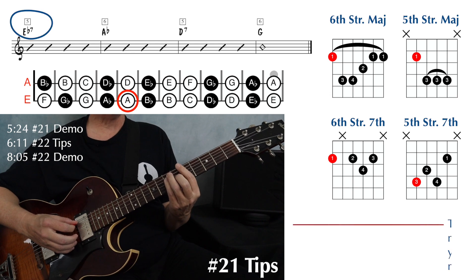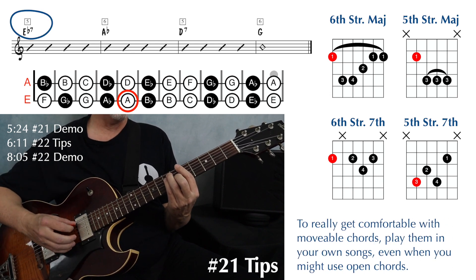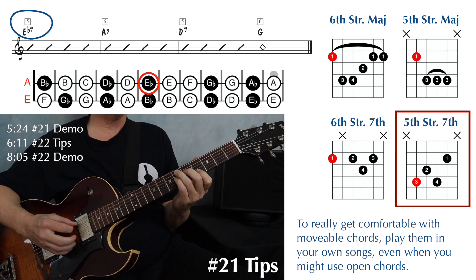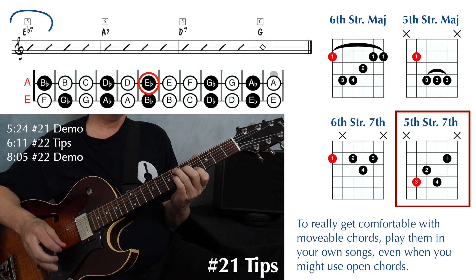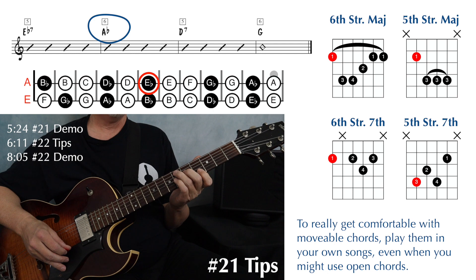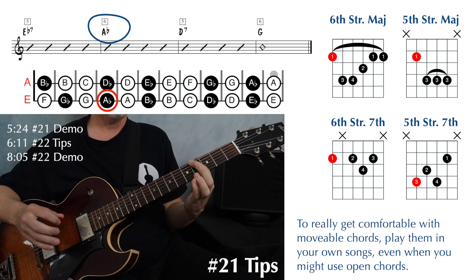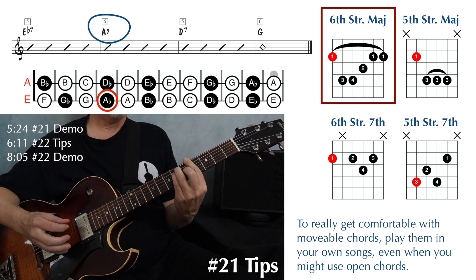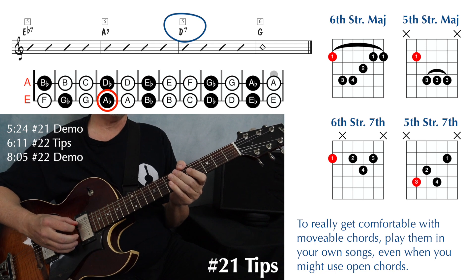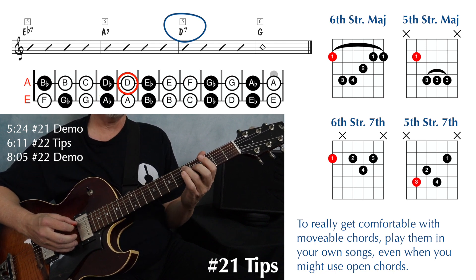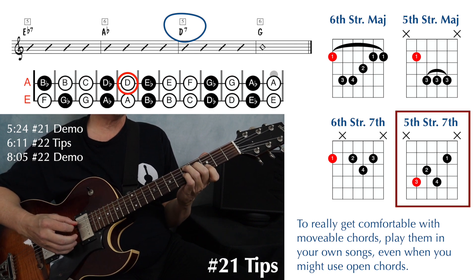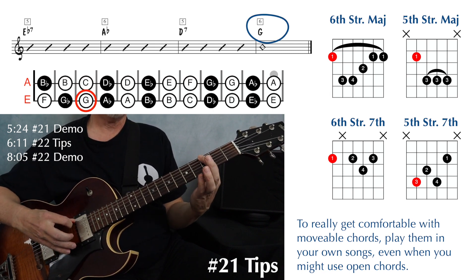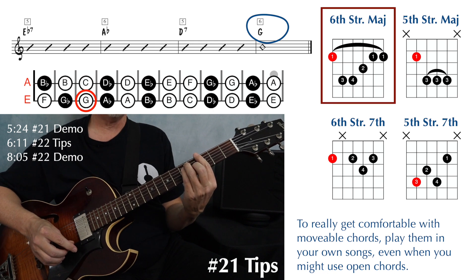Next, we have an E flat seven on string five — that'll be at the sixth fret, with the fifth string dominant seven shape. Moving to an A flat major on string six — your A flat is going to be on the fourth fret on the sixth string, so that'll be the sixth string major shape. And then moving down one more fret, we have a D seven on string five — your D note on string five is at the fifth fret, with that fifth string dominant seven shape. And ending on a G major on string six — your G note on string six is at the third fret, and we play that sixth string major shape.